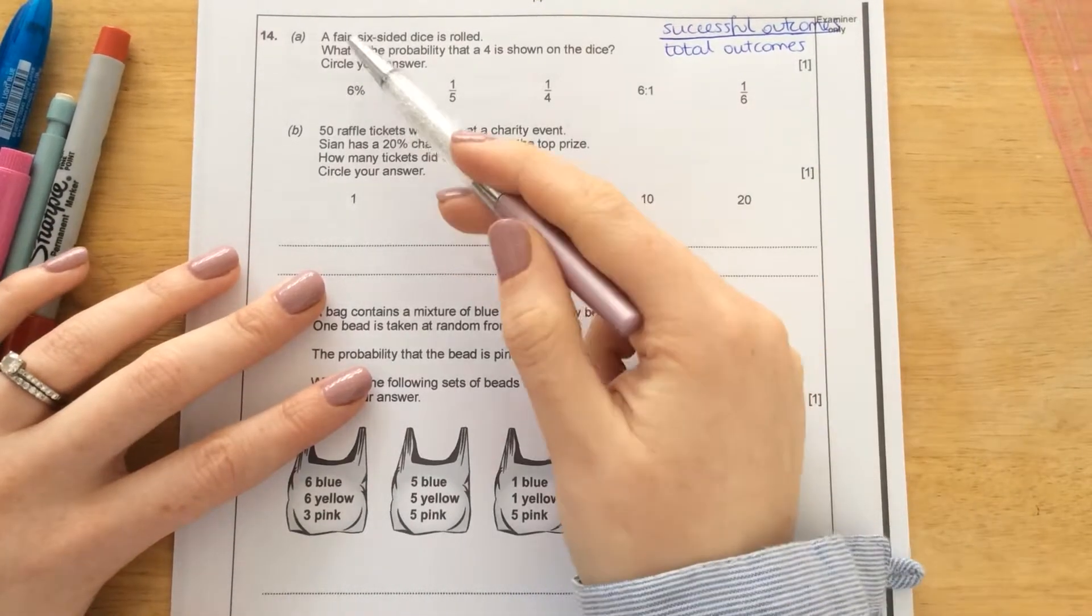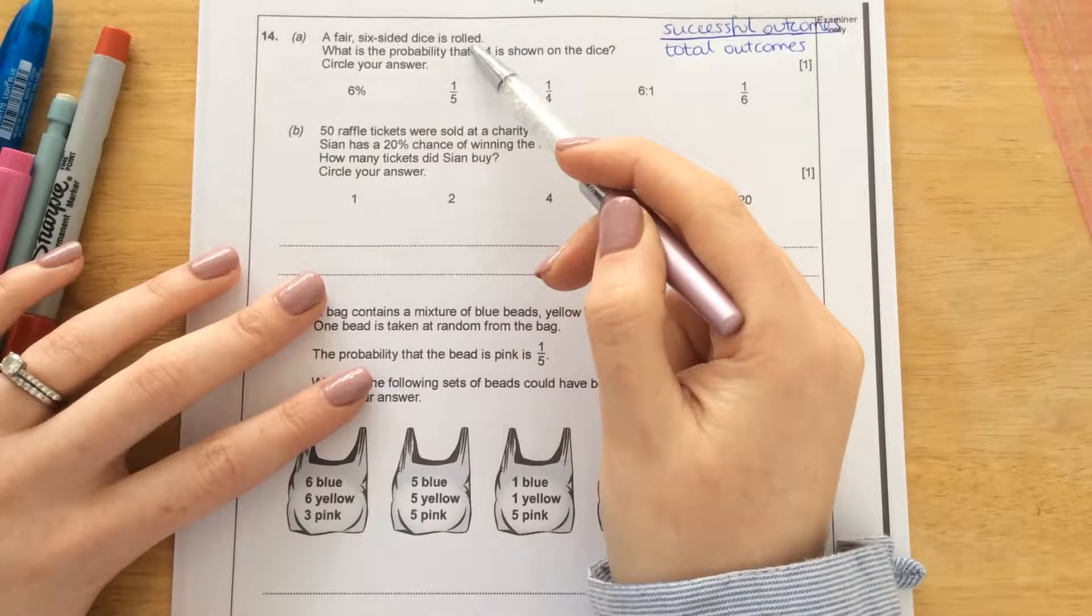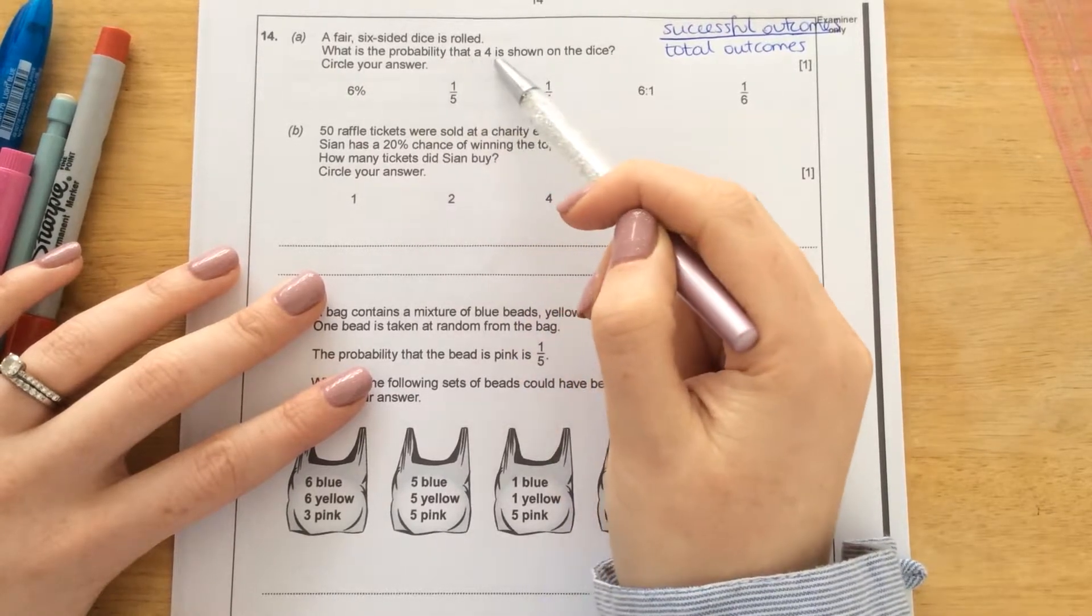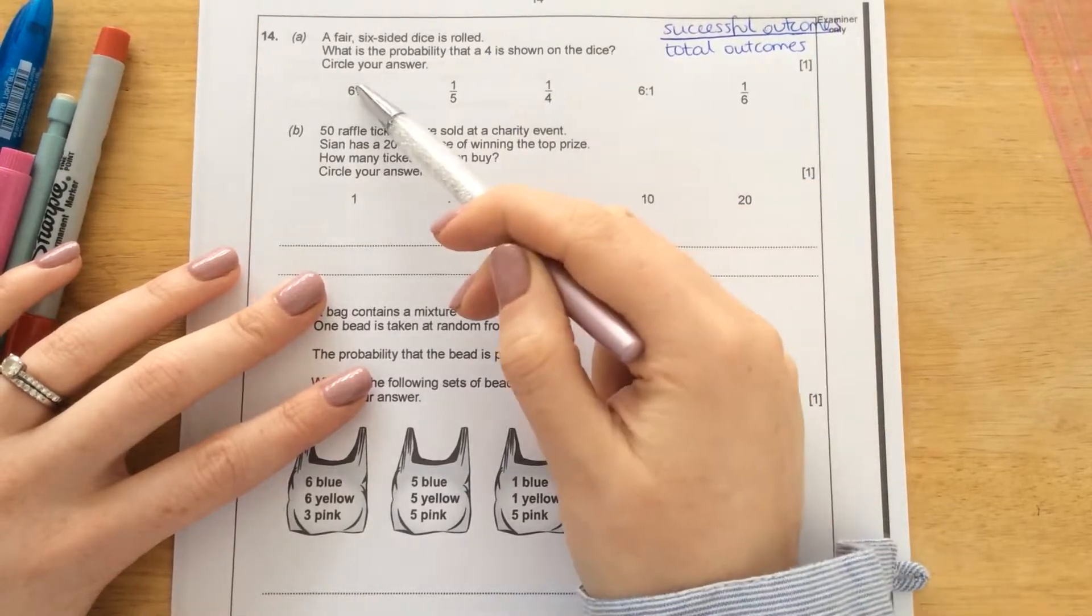Question 14, part A. A fair six-sided dice is rolled. What is the probability that a four is shown on the dice? Circle your answer.